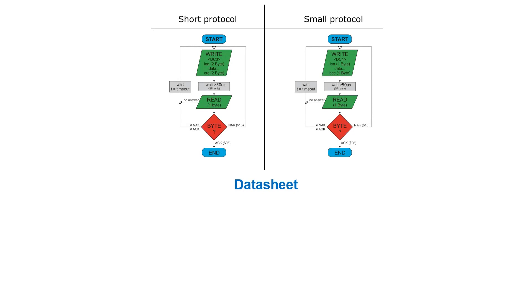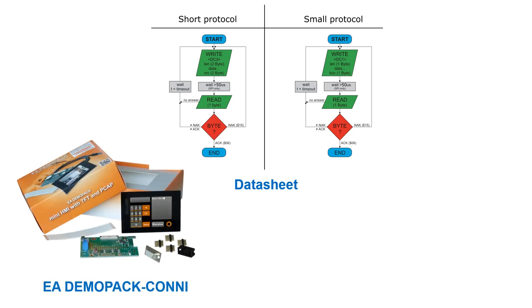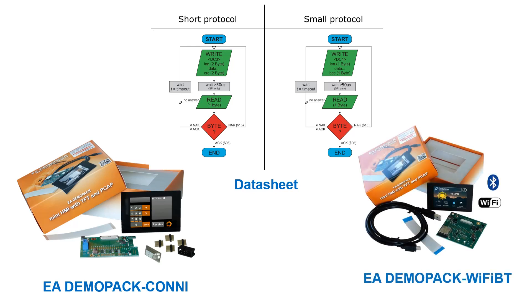Please have a look at the video description. You will find useful links, a datasheet with details about the interfaces, as well as our hardware starter boards. For example, DemoPack Conny can be used to interface the UniTFT-S series to nearly every other system, or use the EA DemoPack Wi-Fi BT to enter the world of networking and Bluetooth. I hope you enjoyed today's UniTFT designer tutorial — feel free to play around with our other sample projects and enjoy our video tutorials.